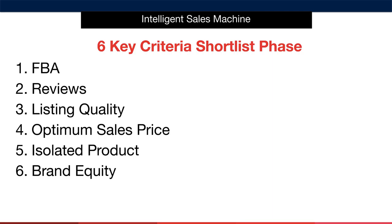You're likely wondering what brand equity and isolated products are — we're going to dive into each of these in the next video. Basically, we're looking at the product opportunity and asking ourselves six key questions about that product listing on Amazon. Number one: who's fulfilling the item to the end customer? Number two: how many reviews has the item got and how established is it on Amazon? Number three: how good is the actual listing itself and can we improve upon it? Number four: is the item selling at an optimum price or is it too inexpensive? Number five: is the item sold on its own or with a bonus product? Number six: is the brand a big international brand that's well known and sells by virtue of the size of the brand?